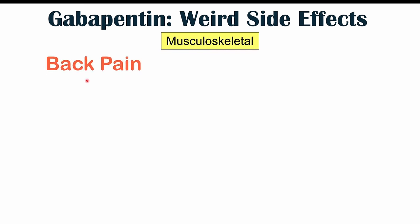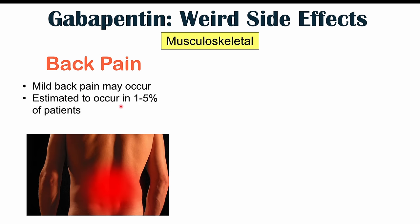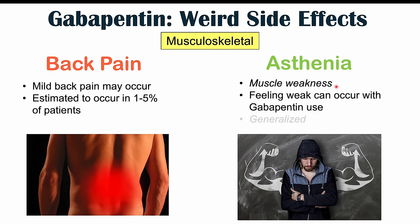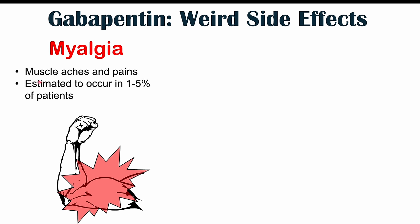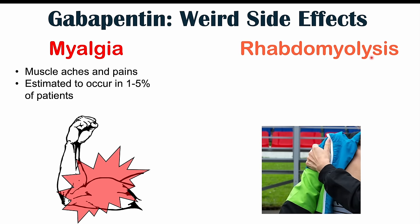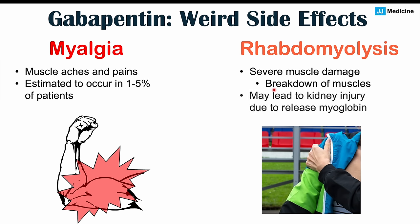Musculoskeletal side effects include back pain, estimated to occur in 1% to 5% of patients. Asthenia, or generalized muscle weakness affecting the arms, legs, or other body parts, can also occur. Myalgia — muscle ache and pain — is estimated to affect 1% to 5% of patients as well. In rare cases, rhabdomyolysis may occur, where severe muscle damage causes muscles to break down and release myoglobin into the blood, which can ultimately lead to kidney injury.